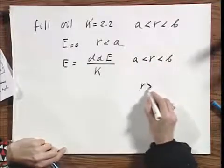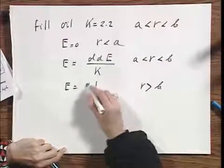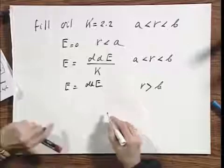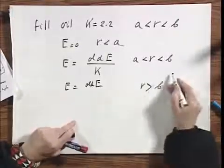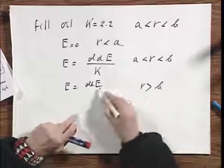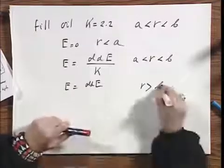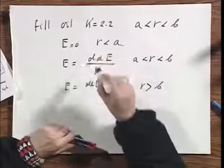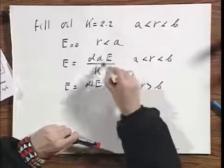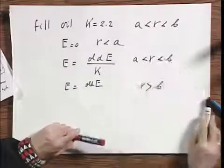That is for R between B and A. But for R larger than B, now the old E does not change, because there is no dielectric outside the cylinder. So now the old E that we calculated, which falls off as 1 over R, remains.